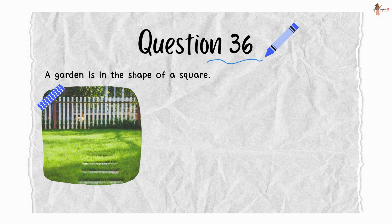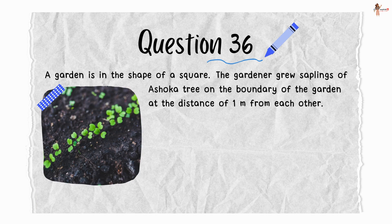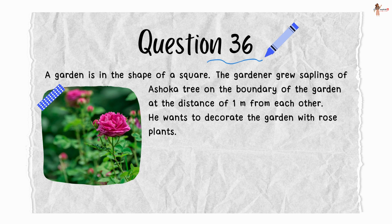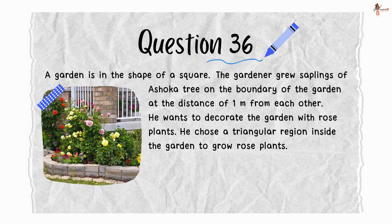A garden is in the shape of a square. The gardener grew saplings of Ashoka tree on the boundary of the garden at the distance of 1 meter from each other. He wants to decorate the garden with rose plants. He chose a triangular region inside the garden to grow rose plants.